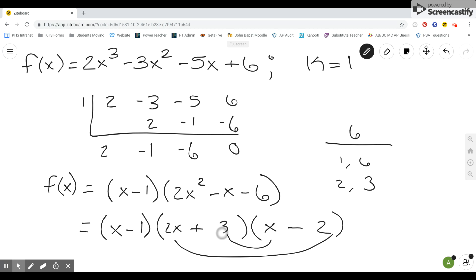And then if I do x times 3, then I have a 3x. So if I have a negative 4x and a 3x, then I get negative x. And so that is your factored form.